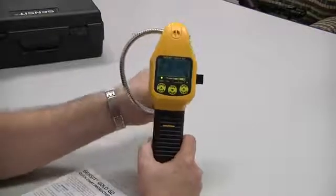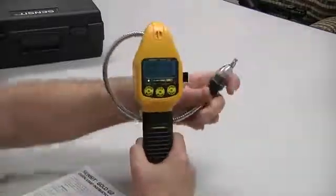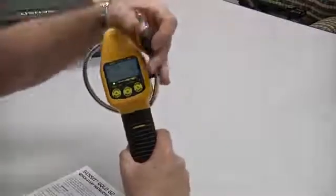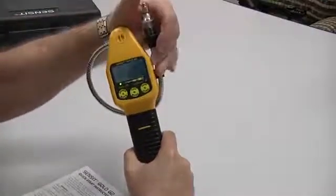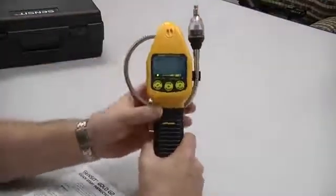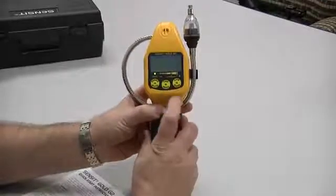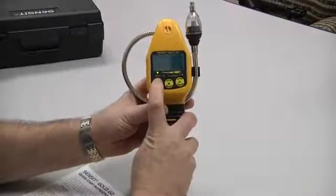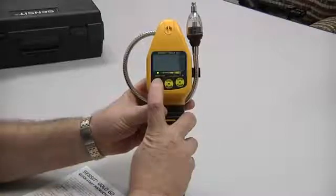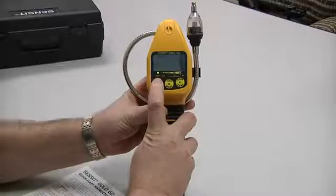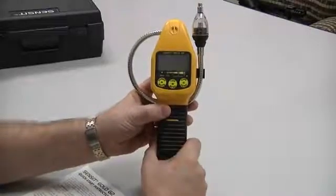After use, wind the gooseneck around the back of the instrument, slide it into the clip, and put it into place. To turn the instrument off, use the power button, hold down until it says power off and release.